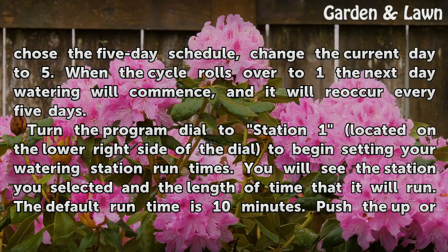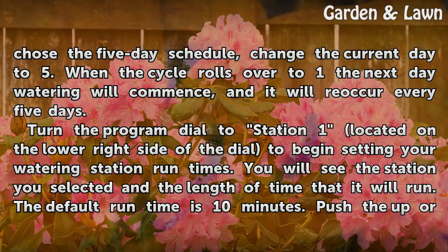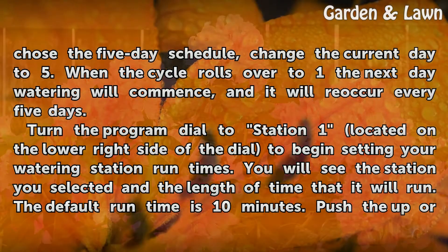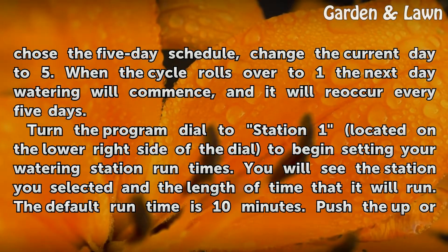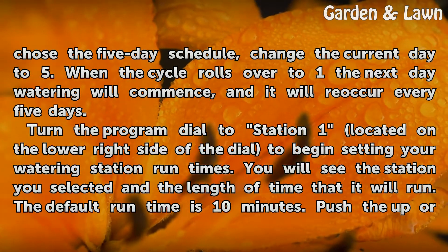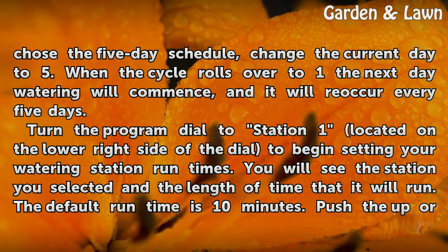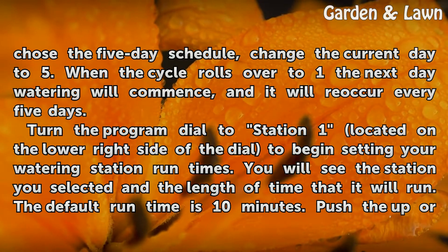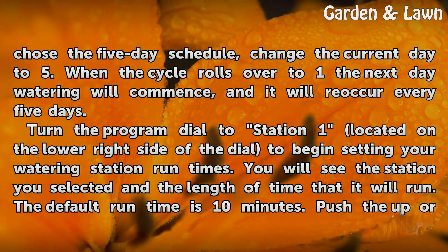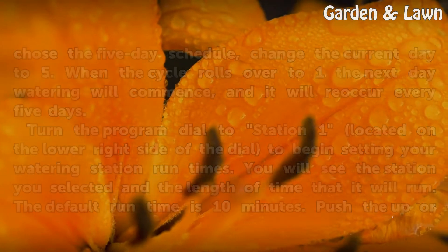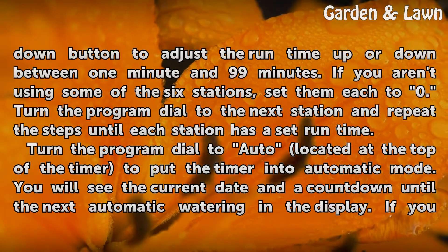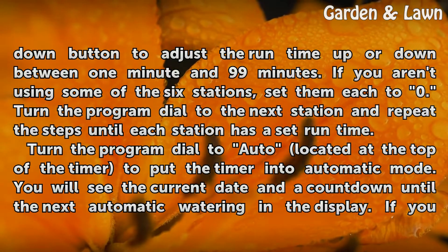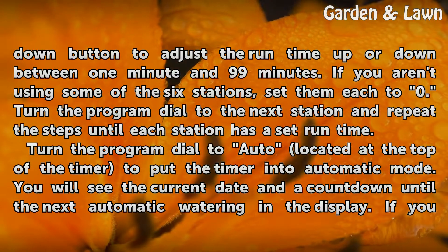Turn the program dial to Station 1, located on the lower right side of the dial, to begin setting your watering station runtimes. You will see the station you selected and the length of time that it will run. The default runtime is 10 minutes. Push the up or down button to adjust the runtime between 1 minute and 99 minutes.